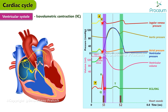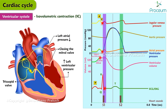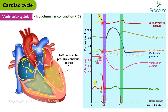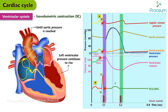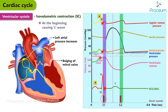During the initial part of isovolumetric contraction, left ventricular pressure rises above left atrial pressure, closing the mitral valve. Mitral valve closure, which occurs slightly before tricuspid valve closure, marks the beginning of isovolumetric contraction. Closure of the atrioventricular valves produces the first heart sound, S1 — the loudest and longest heart sound, continuing into early ejection. Left ventricular pressure continues to rise until aortic pressure is reached. The left atrial pressure increases transiently due to bulging of the mitral valve into the left atrium, causing the C wave.